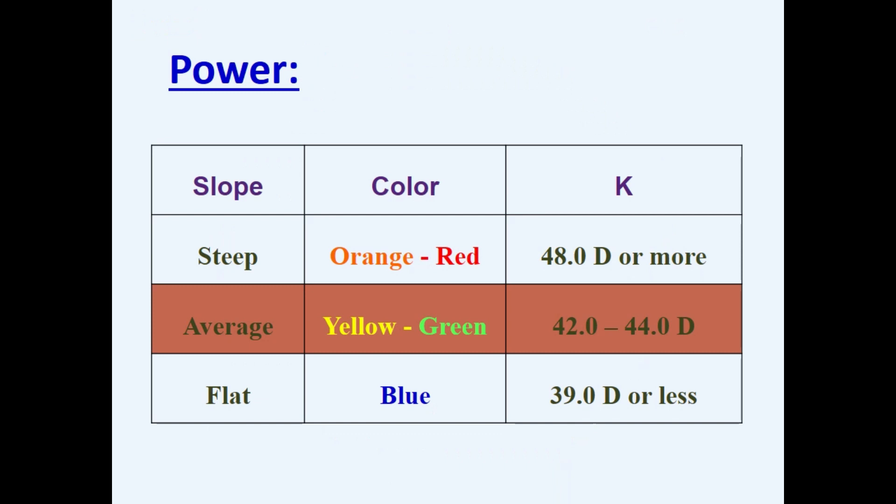The power of normal cornea ranges from 42 to 44 diopters in the center and gradually flattens by 2 to 3 diopters towards the periphery. Normal cornea appears yellow or green. Warm or cool colors are abnormal.